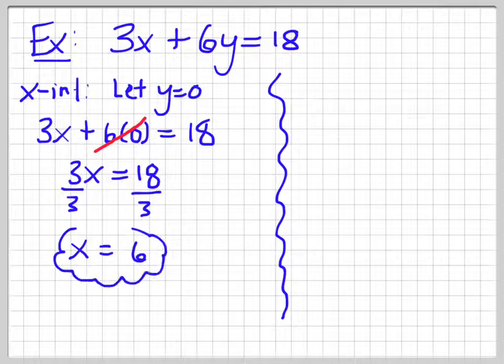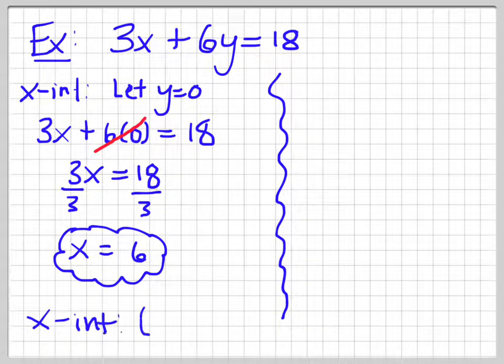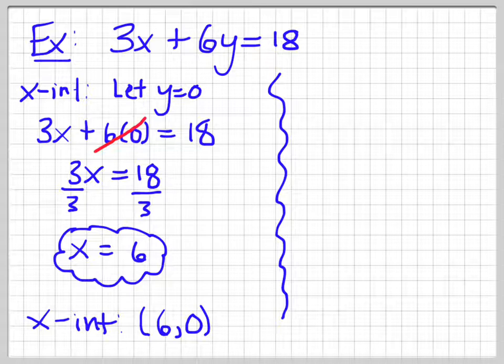So, that's my x intercept. Recognize that the actual intercept is the point (6, 0). So, it goes right there on the x-axis at (6, 0).